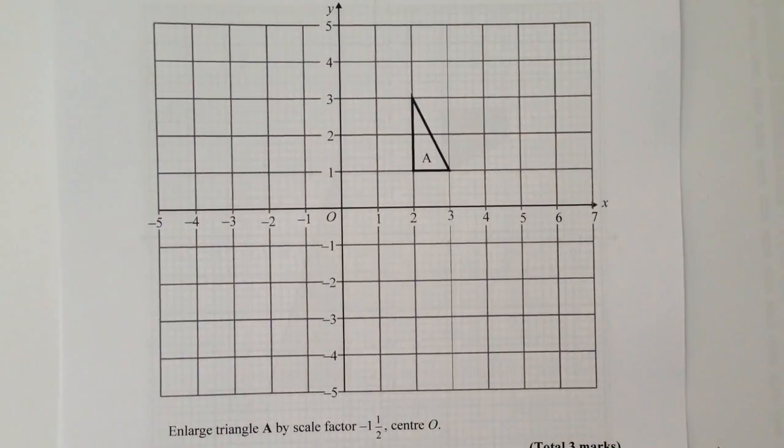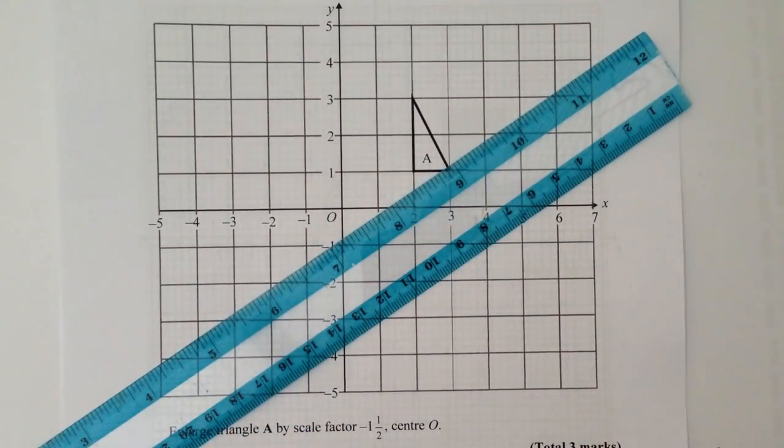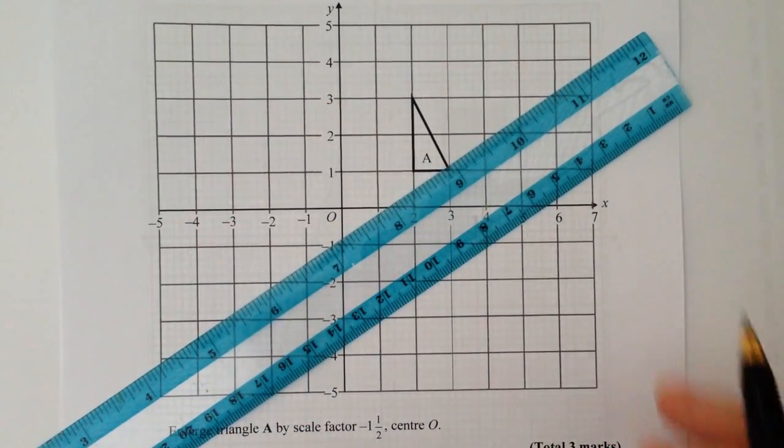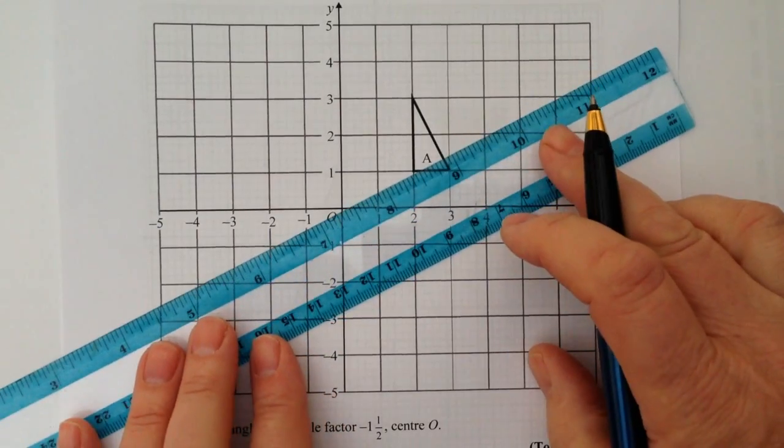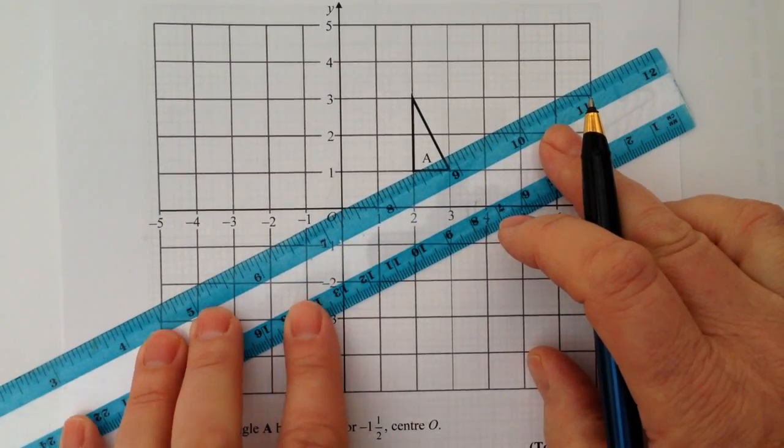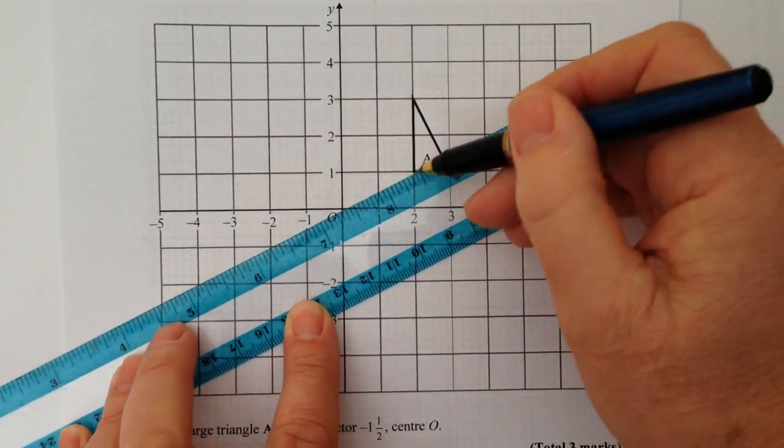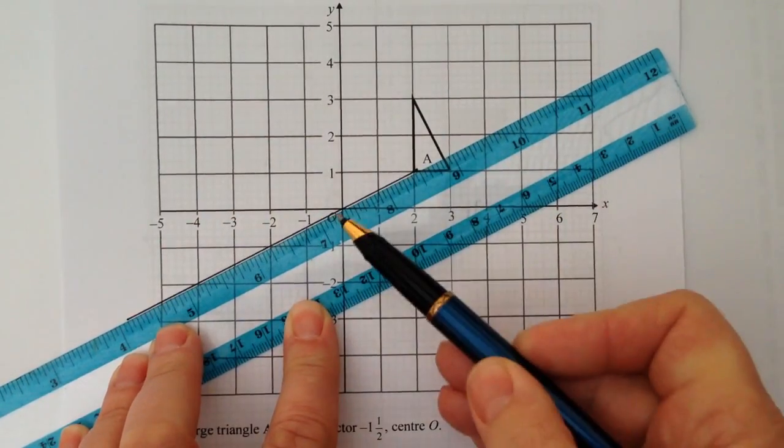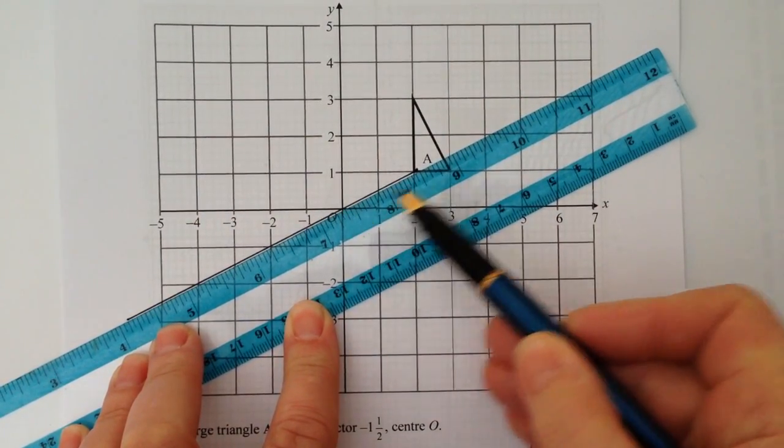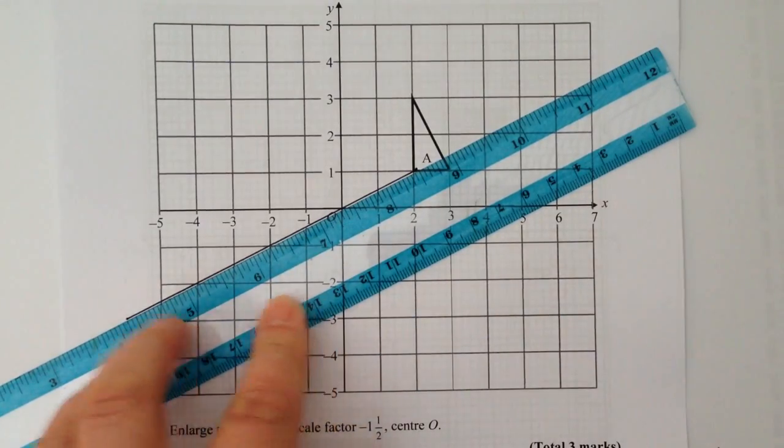So the first thing I'm going to do is draw in the lines of enlargement. Now this is a really important part of the way in which you would tackle these types of questions, in that we need to make sure that because we're passing through zero here that we have these lines that will allow us then to be able to work out where the new point or the new shape is going to be.